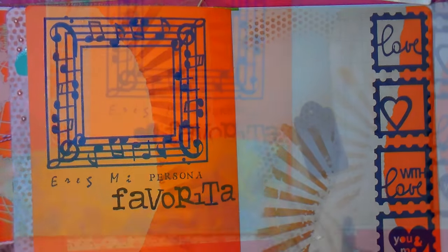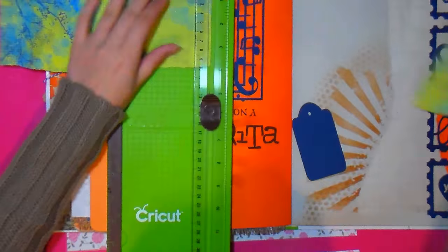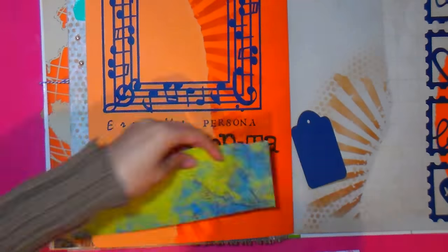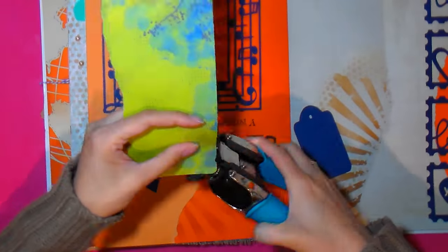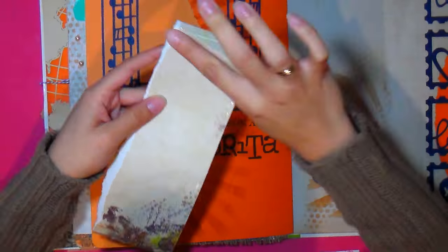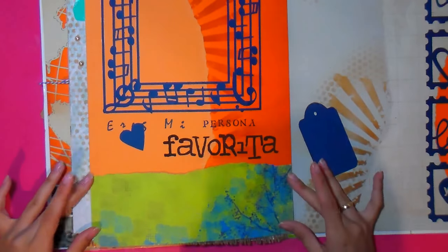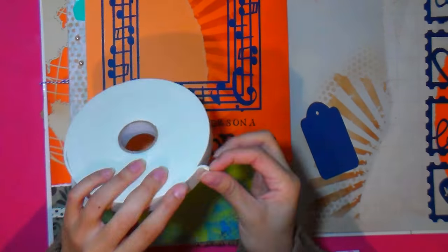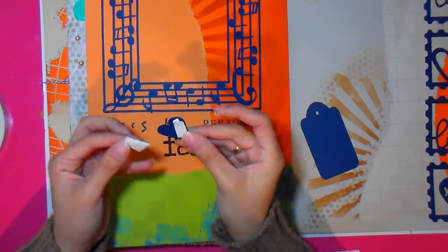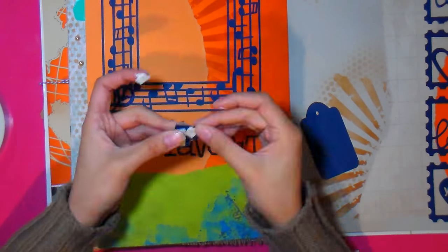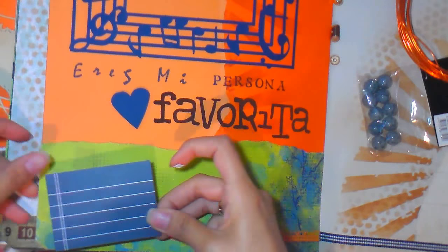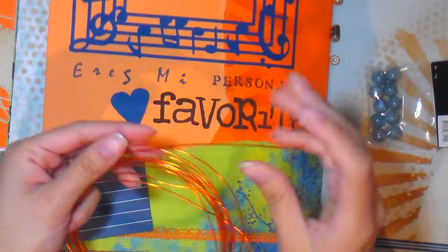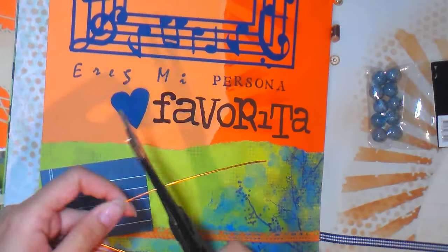Then, to this orange we're going to add this sheet of green and blue paper, which is a collection I had from a long time ago. And I thought it was pretty to add here at the bottom, a little piece.